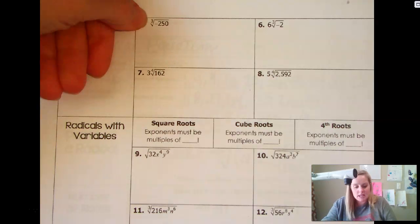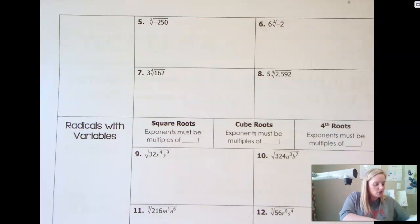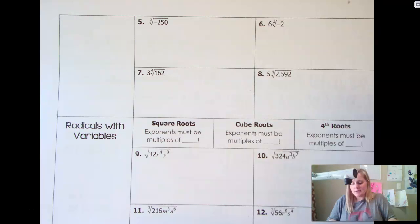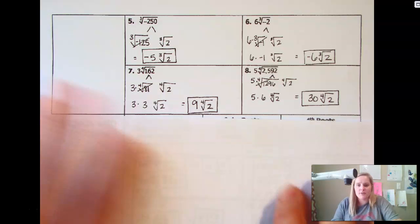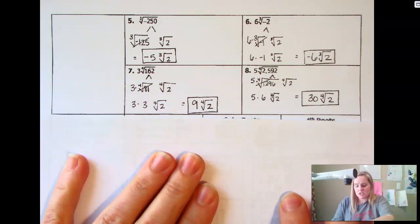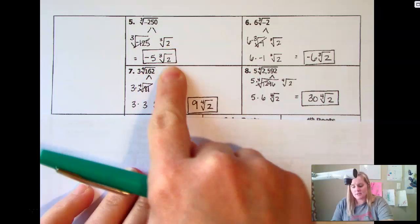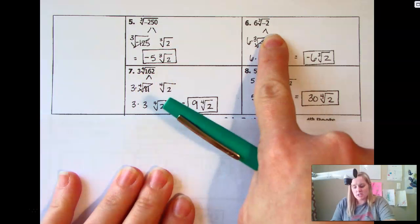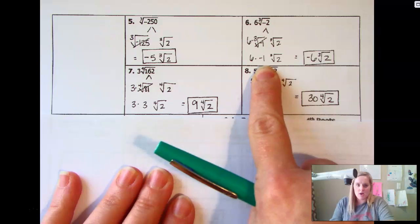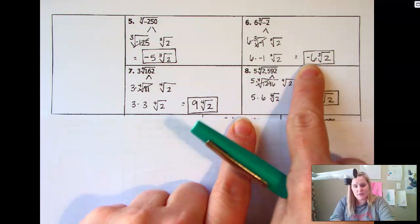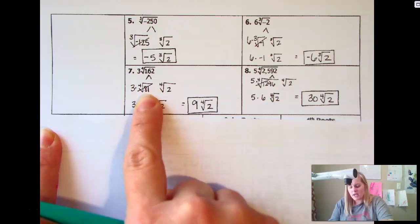We've got the cubed root of negative 250. To speed things up, I'm going to show you the key. You can see that she is just using her perfect cube: negative 125 is a perfect cube that gives her negative 5, and the 2 is left over. For the next one, she splits negative 2 into negative 1 times 2 — that allows her to get the negative out of the radical — so now she has negative 6 on the outside and positive 2 on the inside.